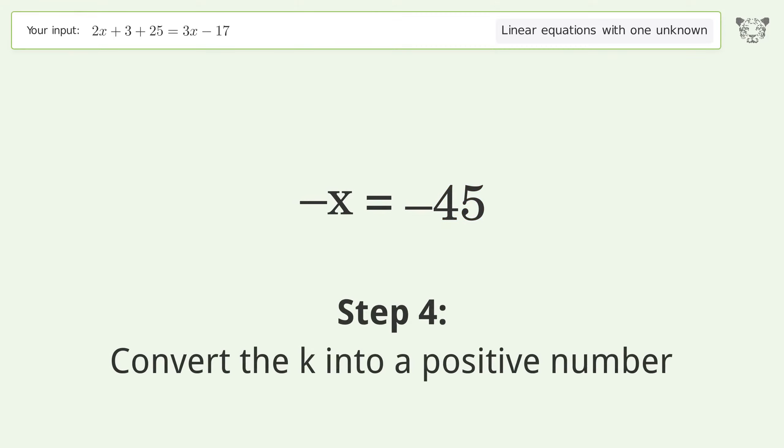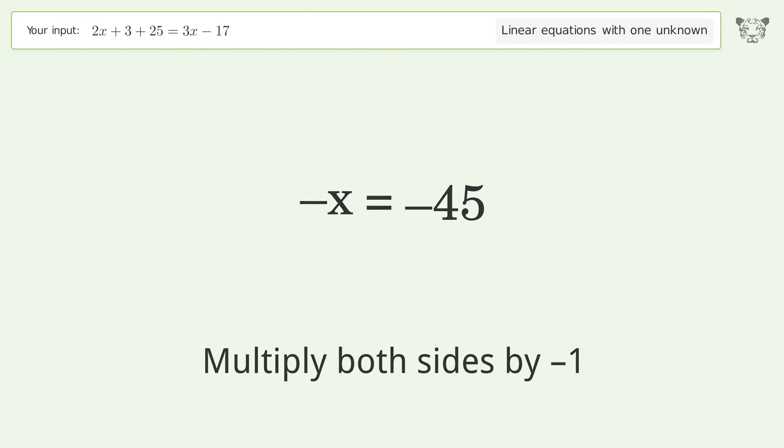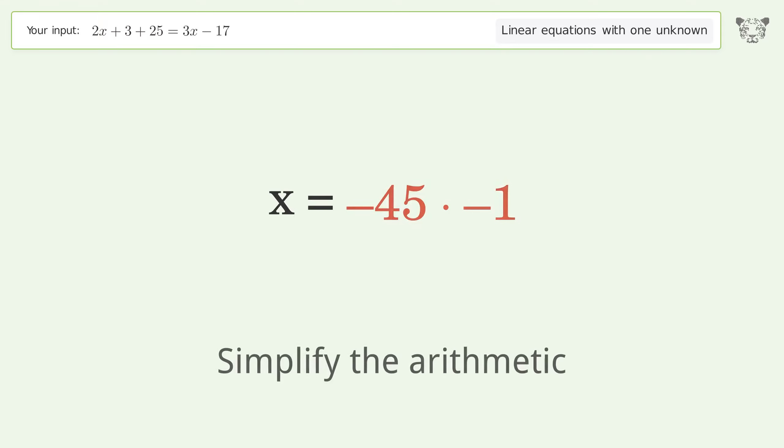Convert the k into a positive number. Multiply both sides by negative 1. Remove the ones. Simplify the arithmetic.